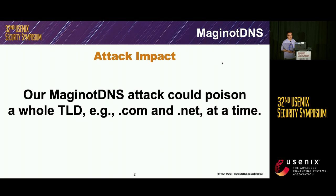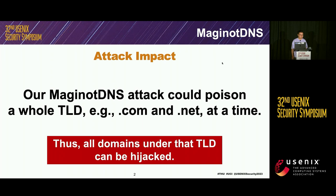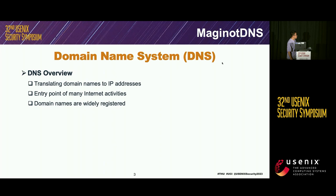Before the details, I'll show you our attack impact. MarginalDNS could poison a whole TLD such as .com or .NET at a time. Thus, all domains under that TLD will be hijacked. In the following, I'll introduce how MarginalDNS works.